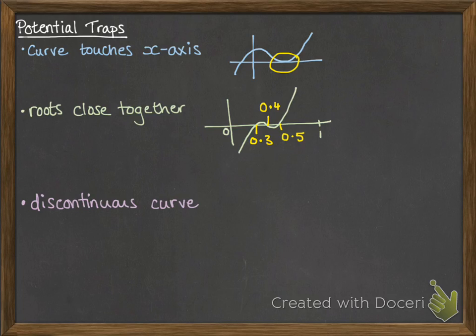And then the other one is if you get a discontinuous curve that looks like this where you have an asymptote or something similar, where if you went to the left of that asymptote and the right it would show you that there was a change in sign. It would tell you that there was a root there at say 0.8.